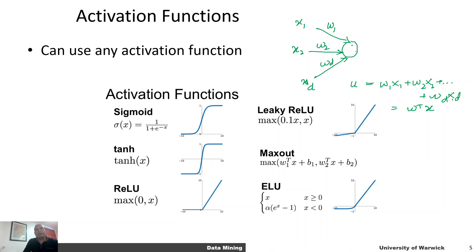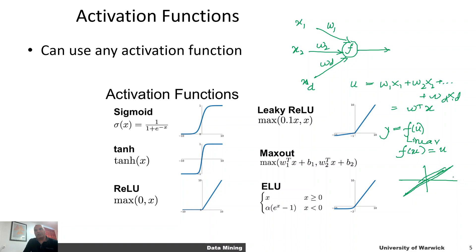The net input u then has an activation function f applied to it, and the output of this neuron is f(u). If you have a linear activation function, the net input u gets transmitted as is — that is, f(u) = u. This is called a linear activation. We can draw this: whatever the net input u is, the output is the same value. So essentially there is no transformation — it's a linear activation.